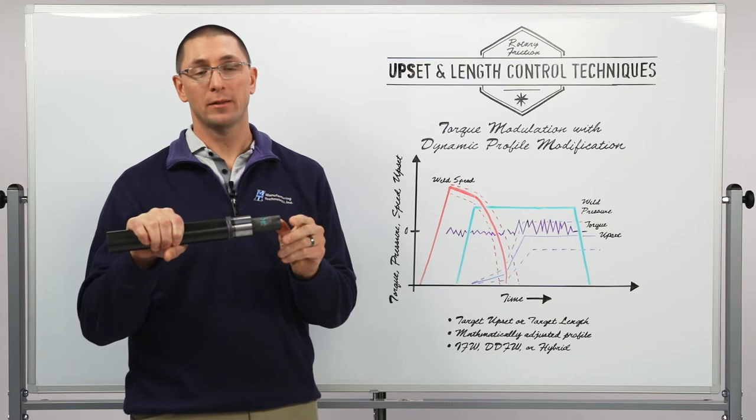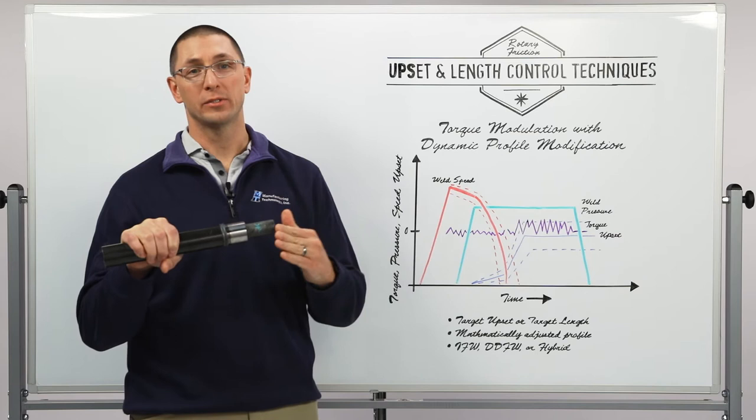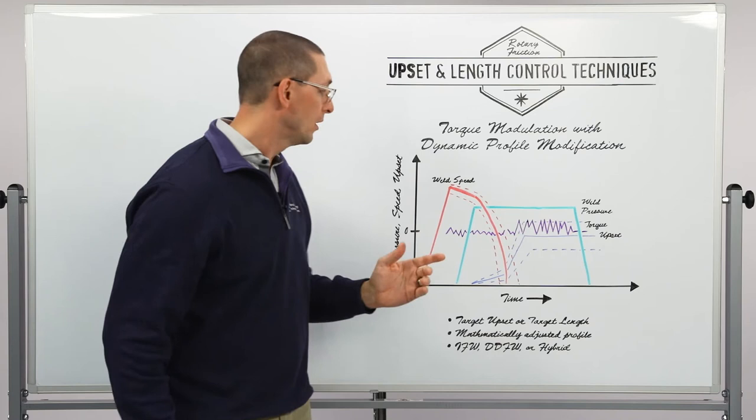But what happens when my incoming part lengths vary? Now I need a way to accommodate, a way to get more upset or less upset in order to achieve a target length between the two parts.